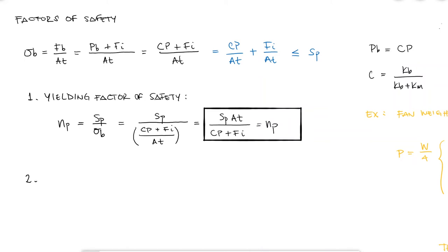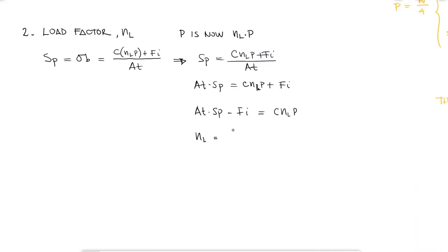The second indicator for a factor of safety is the load factor, which is applied to the external load P only, meaning it's guarding the bolt against overloading. Applying the load factor NL to the load only, meaning the load is no longer just P but NL times P, we can assume that sigma B is equal to the proof strength with that load factor already in it, and solve for the load factor NL.